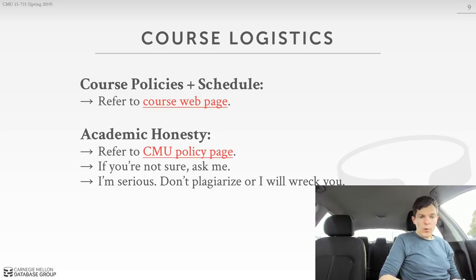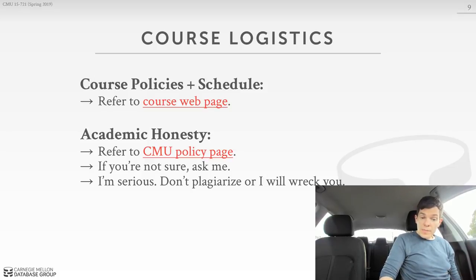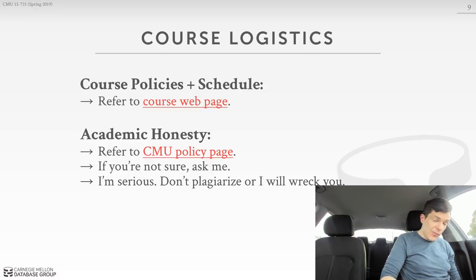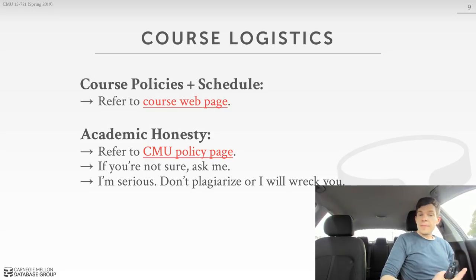For course logistics, the course policies and full schedule are available on the course website. One recurring thing I'll emphasize is not to plagiarize — this is a really big deal. If you're unsure what it means to plagiarize, you can look at the CMU policy page, or just ask me. I'd rather have you ask me than, for example, copy a piece of software you found on the internet that solves the problem you want to solve. If you plagiarize in this course and we catch you, we will report you. That's just the way it is.